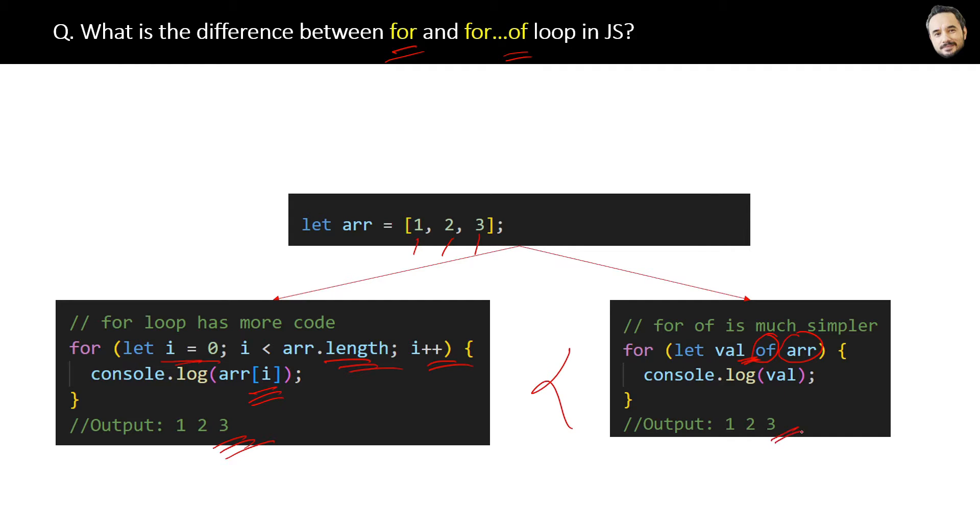Here is the output as expected. So you got it - the difference between them is: for loop is slightly more complex having more lines of code, whereas for...of is much simpler and is better for iterating arrays.